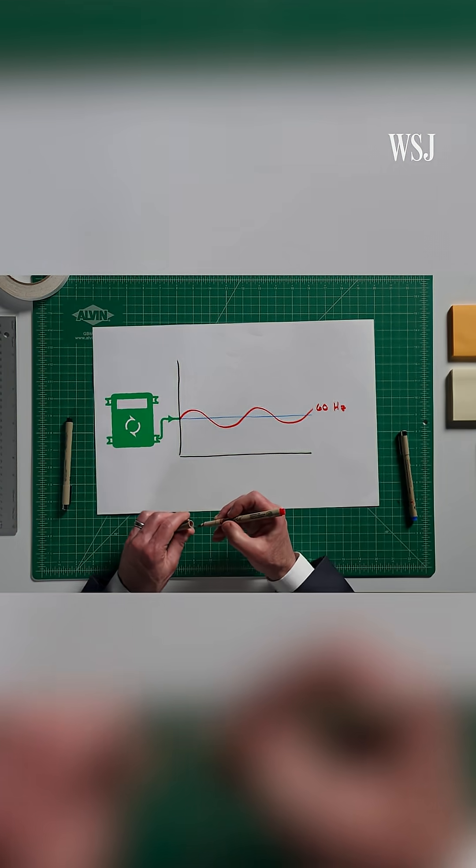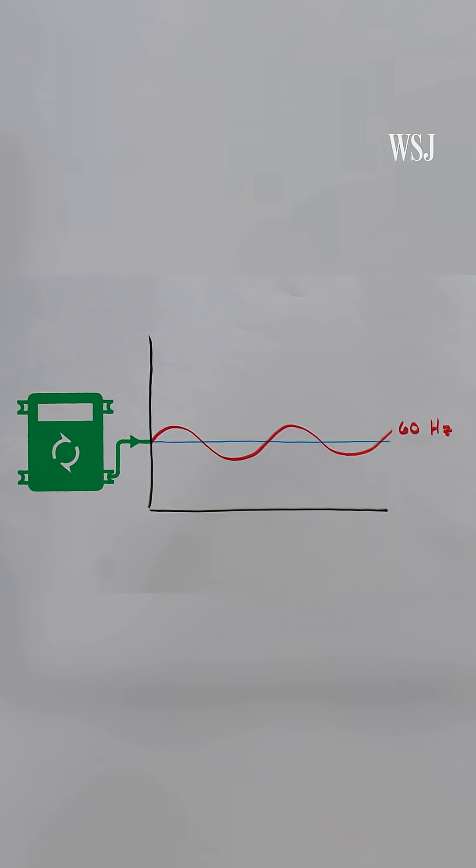That's what a grid forming inverter does. And because it's adjusting everything electronically, it can react to frequency changes much faster than a conventional generator. It also has an endless supply of synthetic inertia.